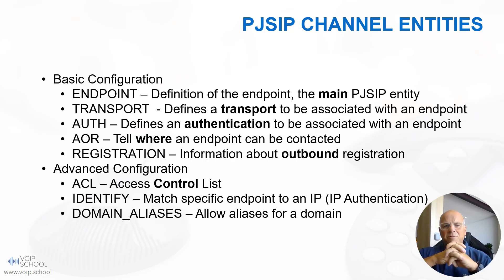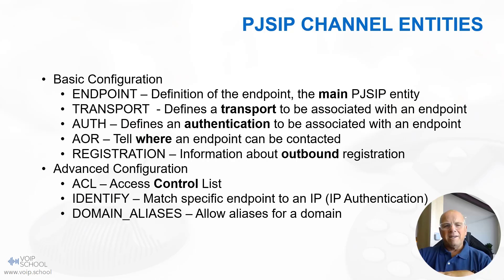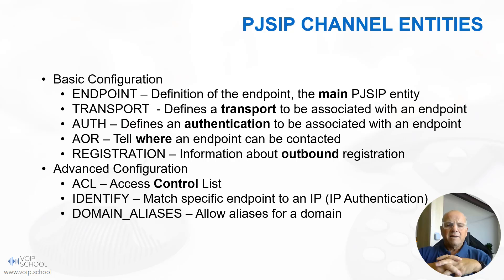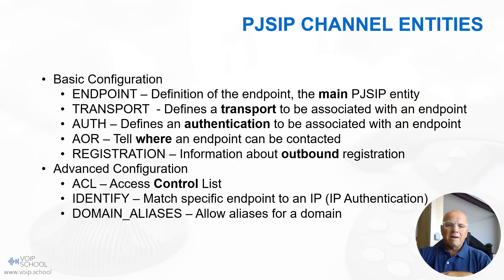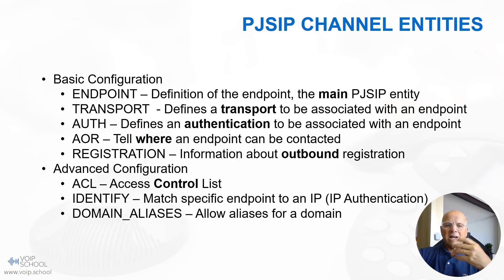In PJSIP channel configuration, there are two main sections: the basic configuration and the advanced configuration. Under basic configuration, you start by defining the endpoint, which is the main PJSIP entity and its parameters. Transport associates a transfer protocol like UDP or TCP with the endpoint. Authentication sets up the authentication mechanism for the endpoint. And AOR — address of record — specifies how an endpoint can be contacted.